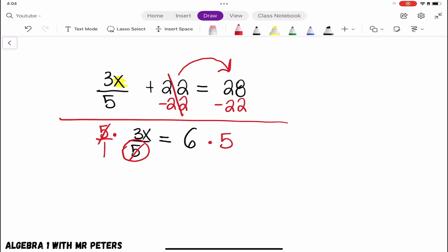So now what we have is 3x is equal to 6 times 5, which is 30.